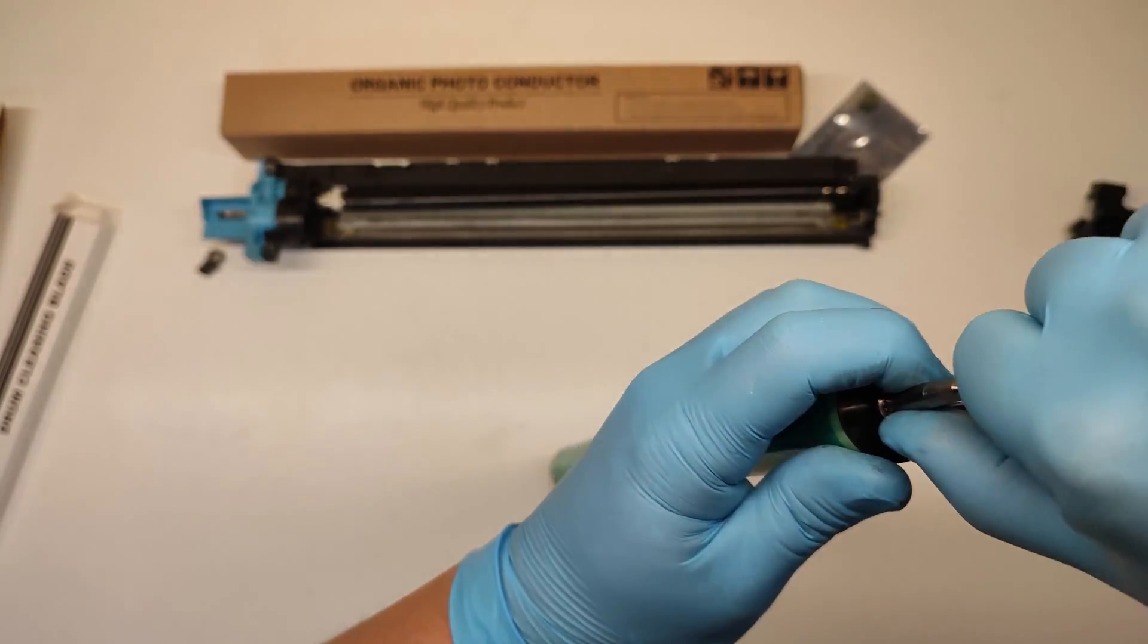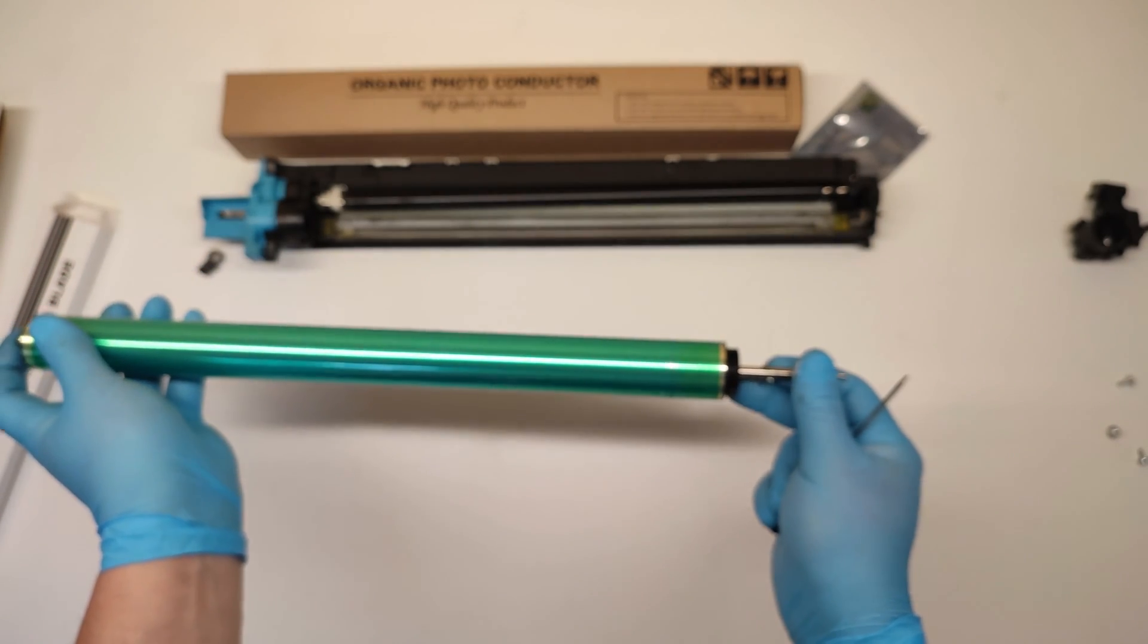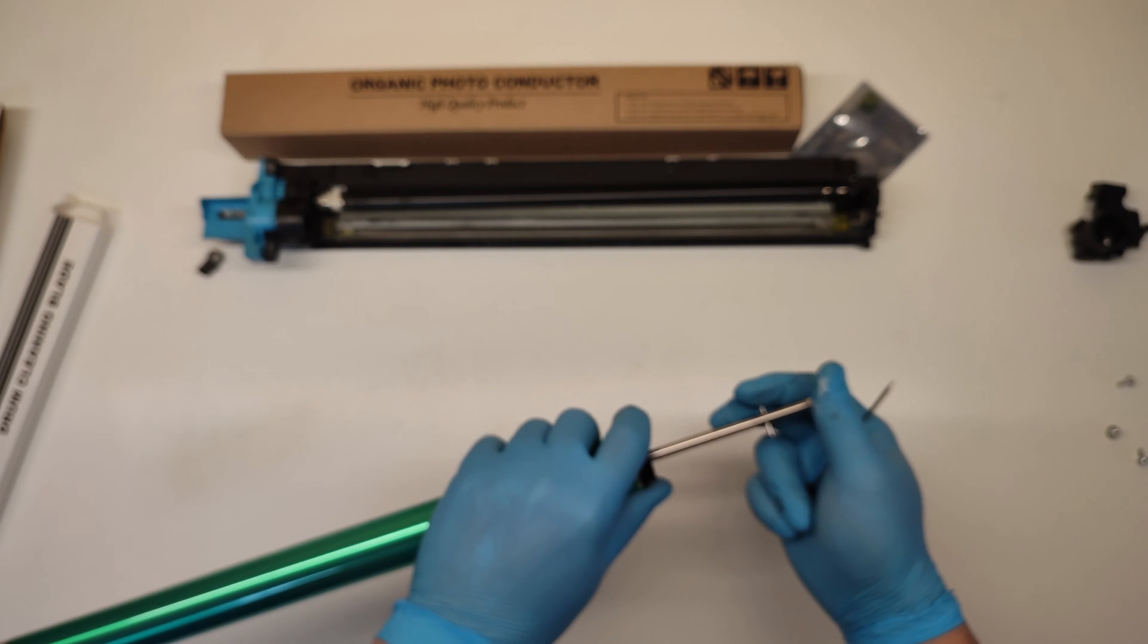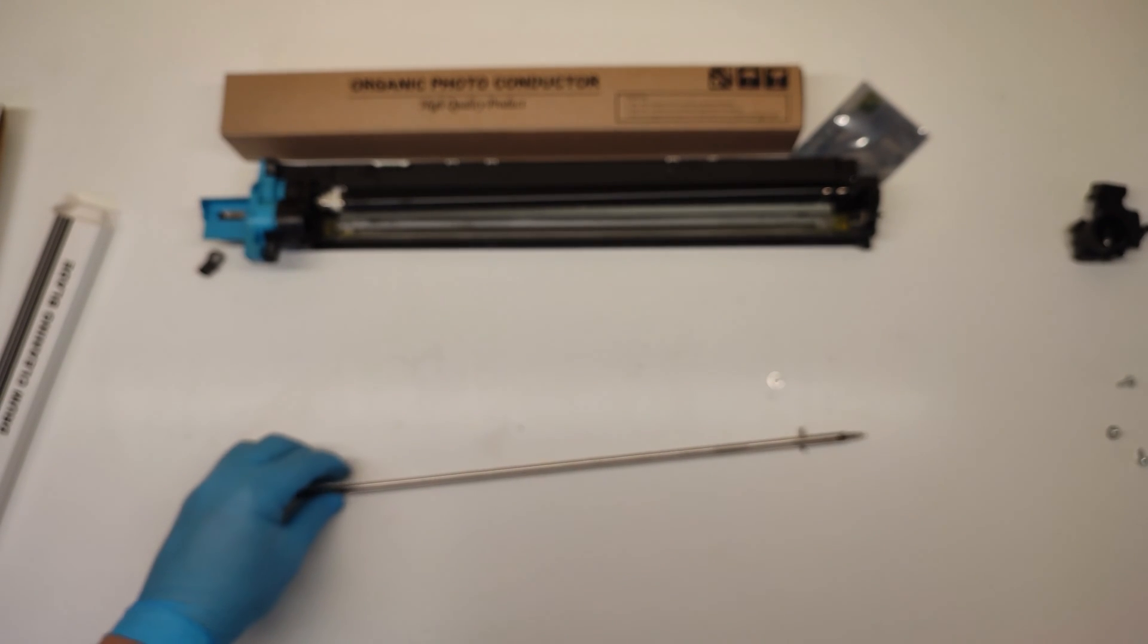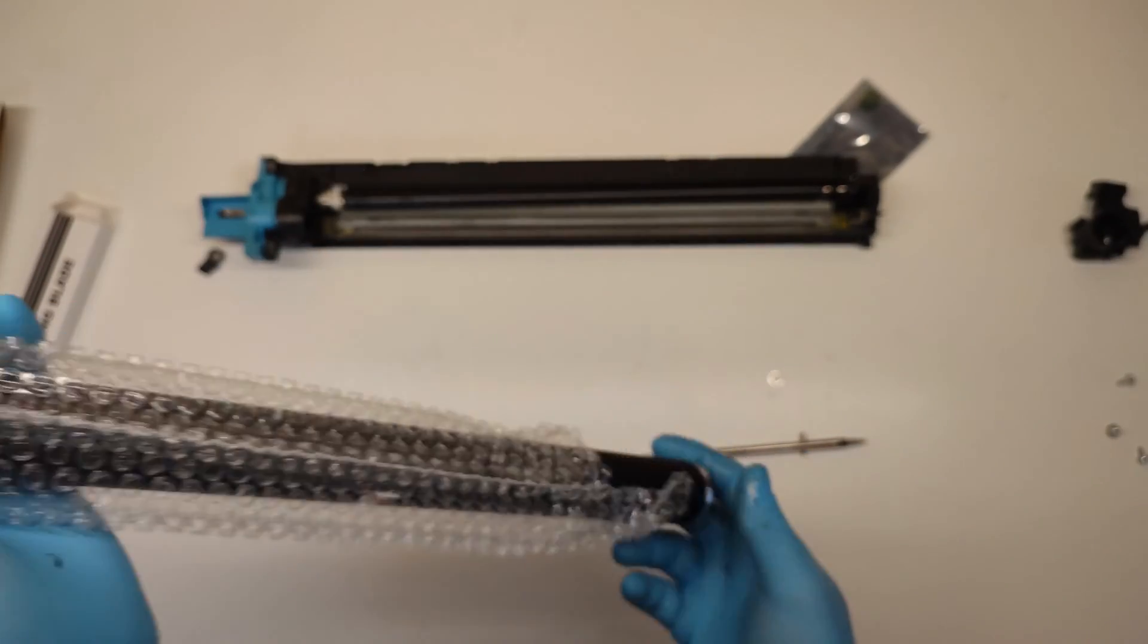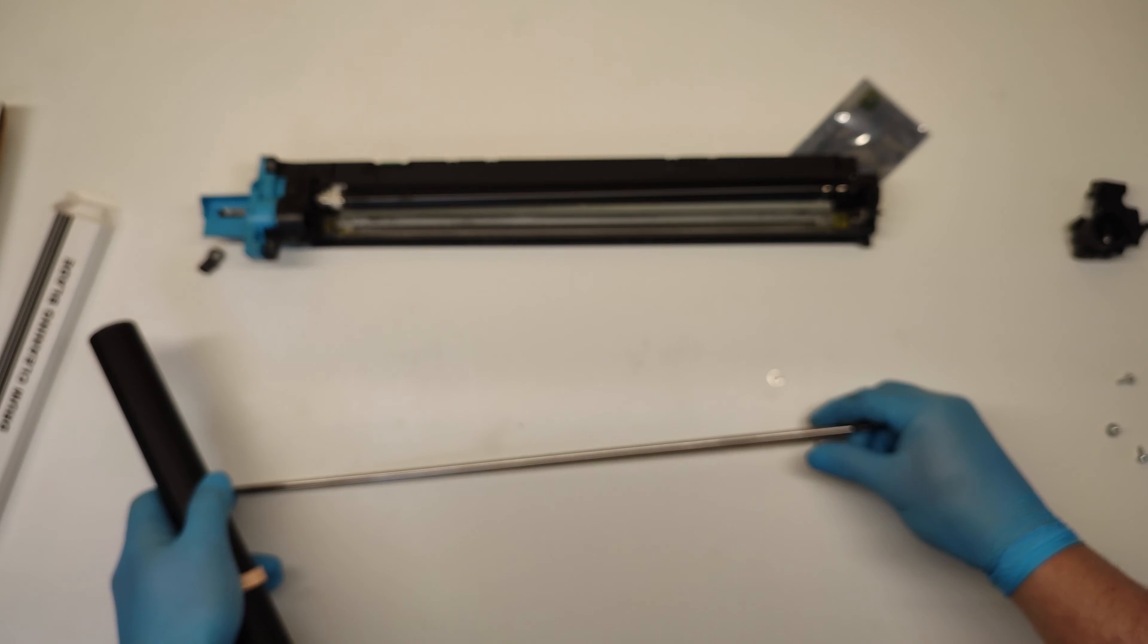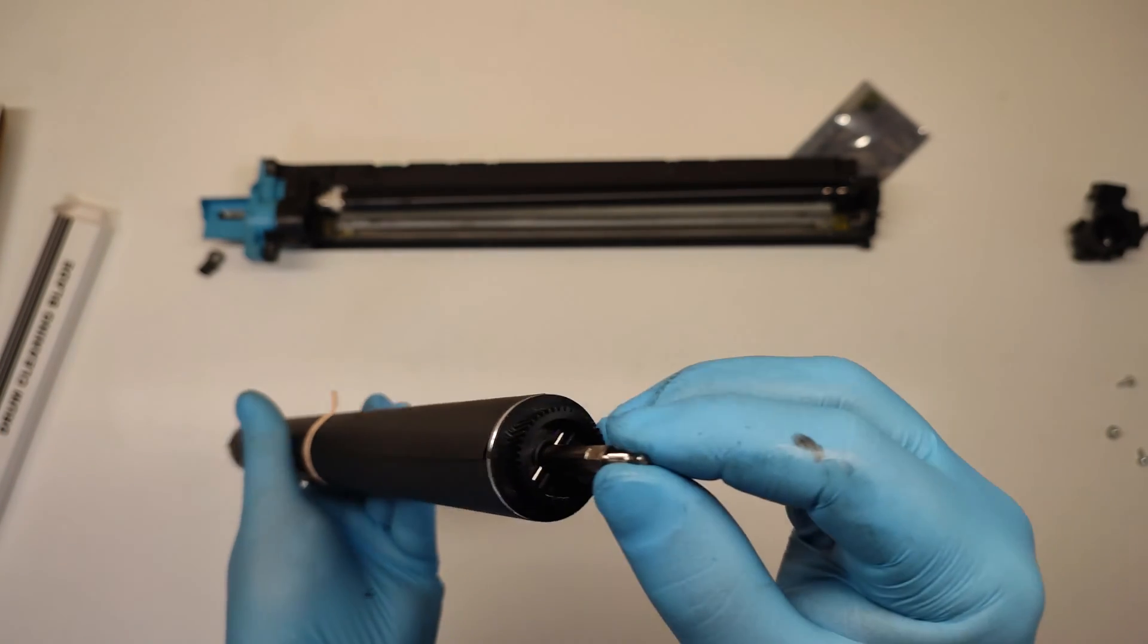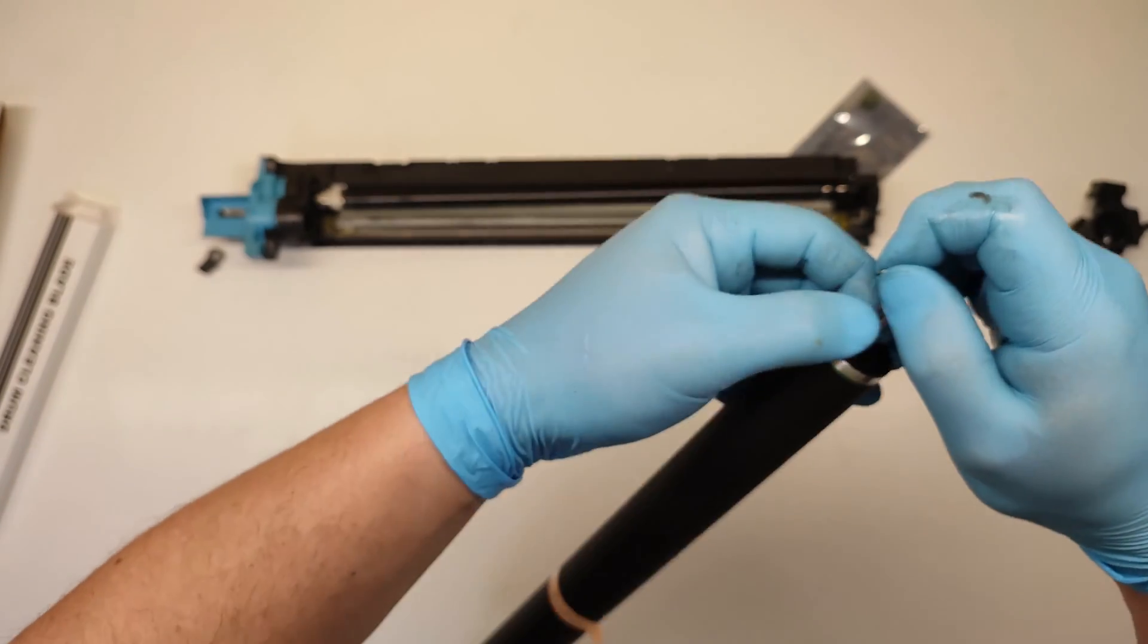The final thing is to replace the OPC drum. Carefully take out the OPC drum because look we have here be careful not to lose it and put this spring on the other side.